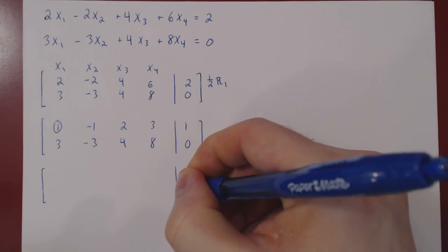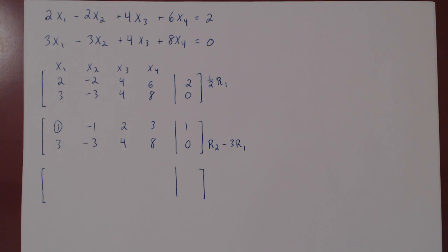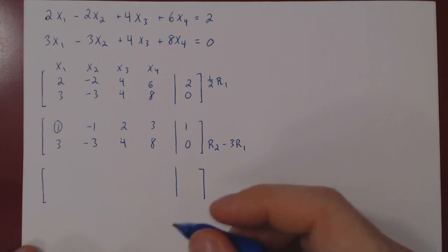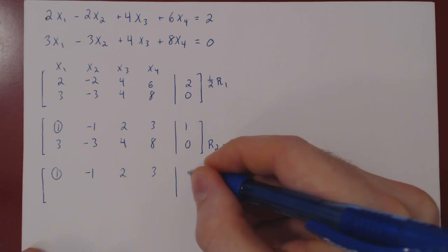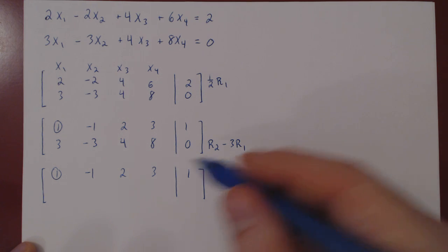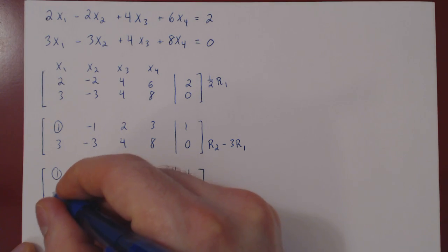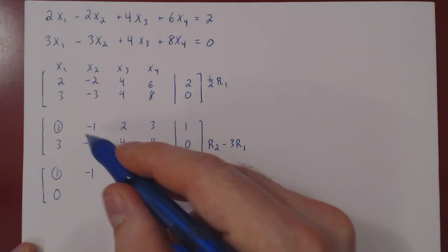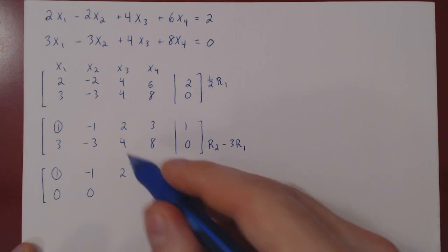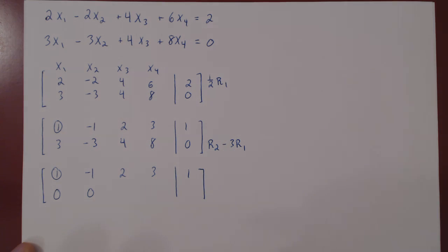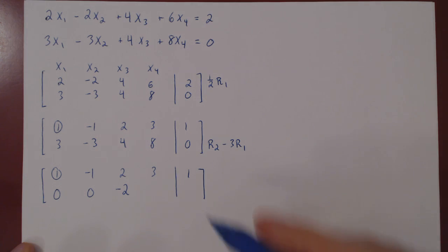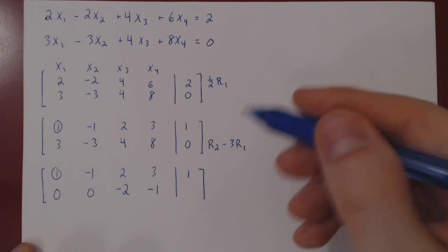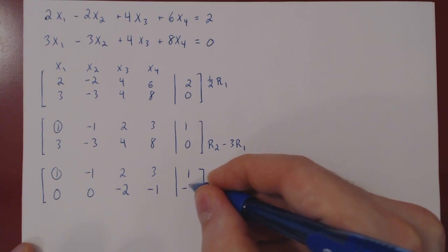We'll copy the first row, as we are not changing it. Let's apply the row operation. 3 minus 3 is 0. Negative 3 minus 3 times negative 1 is plus 3, gives us also 0. 4 minus 3 times 2, 4 minus 6, negative 2. 8 minus 3 times 3, 8 minus 9, negative 1. And 0 minus 3 times 1, 0 minus 3, negative 3.